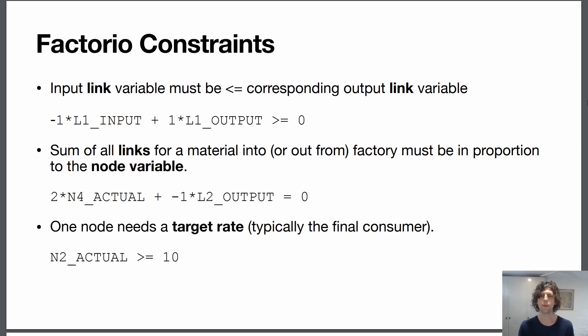The sum of all links for a material into or out from a factory must be in proportion to the node variable. So this is saying that if the actual rate of cog production at n4_actual needs to be twice whatever is being consumed out of the output. So this links the node variables to the previous constraint.